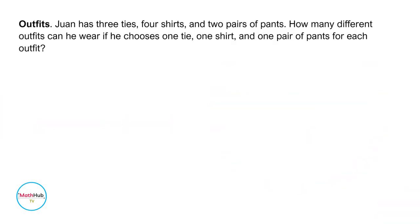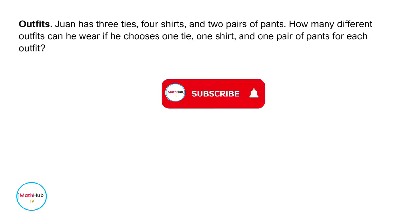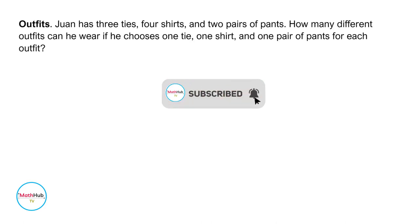Juan has three ties, four shirts, and two pairs of pants. How many different outfits can he wear if he chooses one tie, one shirt, and a pair of pants for each outfit?